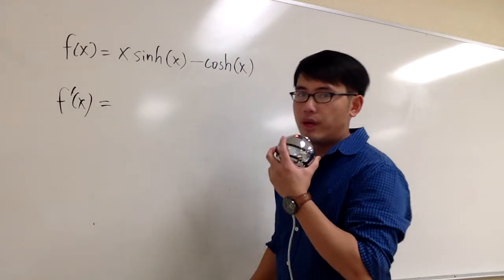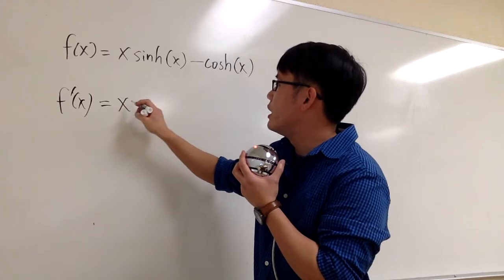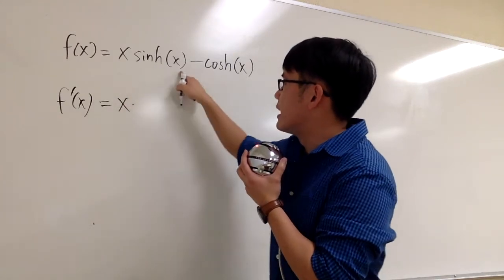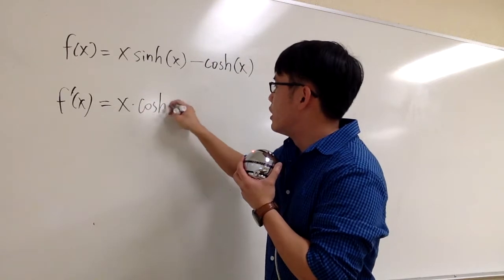For the product rule, we are going to keep the first one, so x right here, and multiply by the derivative of the second. The derivative of sinh x is cosh, so write down cosh of x.